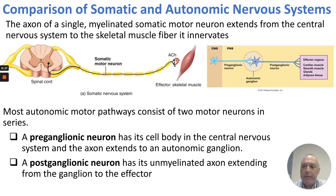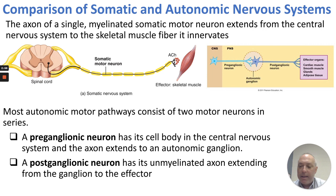The axon of a single myelinated somatic motor neuron extends from the central nervous system to the skeletal muscle fiber it innervates — these can be very long motor neurons. In the CNS, we have the cell body with the preganglionic neuron synapsing at the autonomic ganglia and then the postganglionic neuron, which innervates the effector organs. Most autonomic motor pathways consist of two motor neurons: a preganglionic neuron with its cell body in the CNS and its axon extending into the autonomic ganglia, and a postganglionic neuron with its unmyelinated axon extending from the ganglion to the effector.